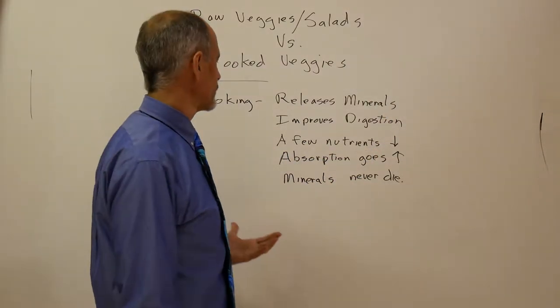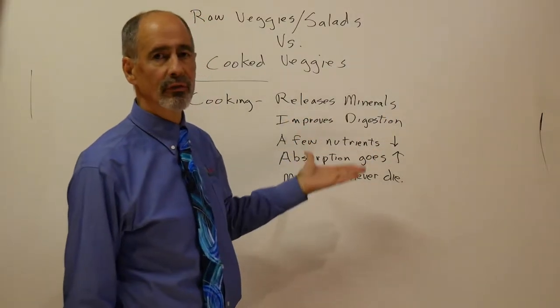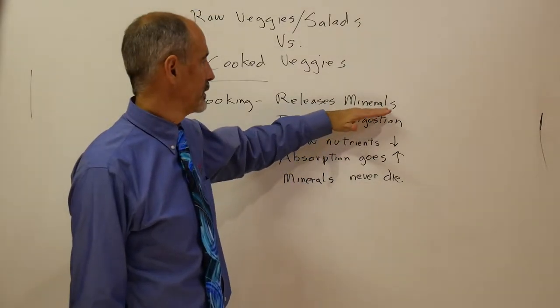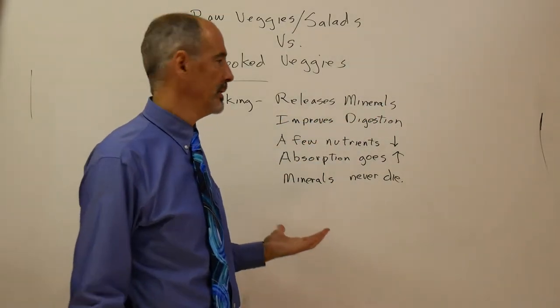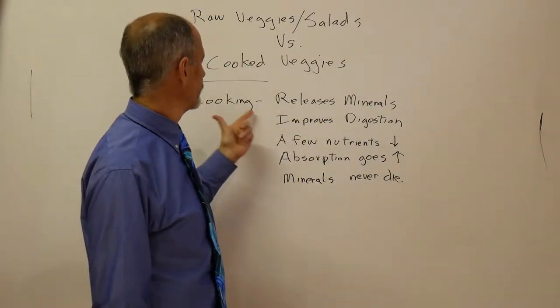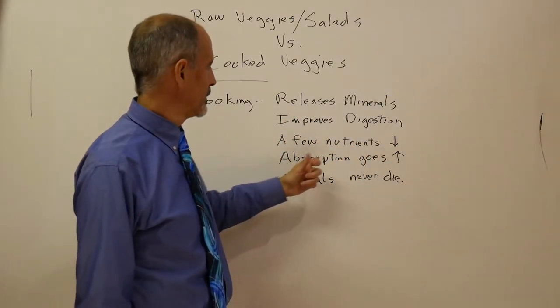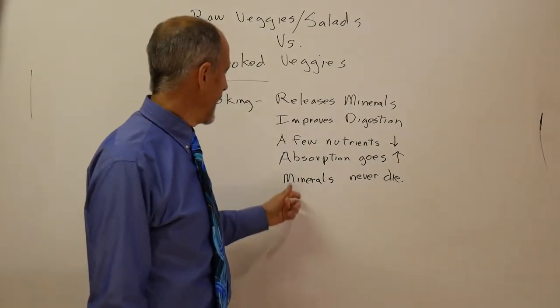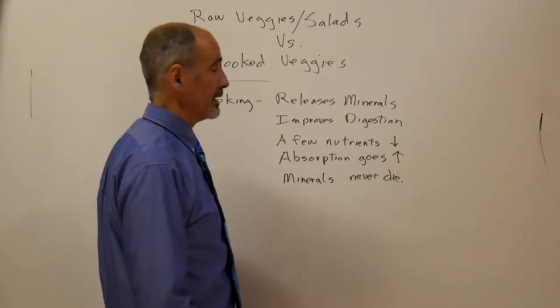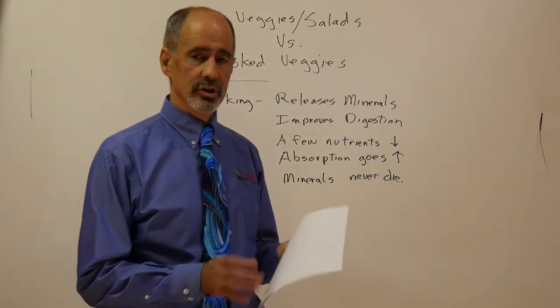What happens when you cook a vegetable is you do kill a few of the vitamins, but you never kill the minerals. In fact, you release them into the water. So cooking the vegetables improves digestion. You might lose a few nutrients, but the absorption goes way up, and minerals never die. We really recommend this soup at a minimum to help you increase your vegetable intake.